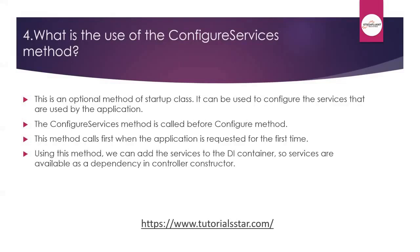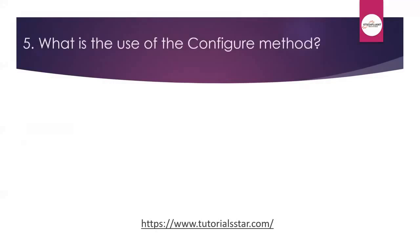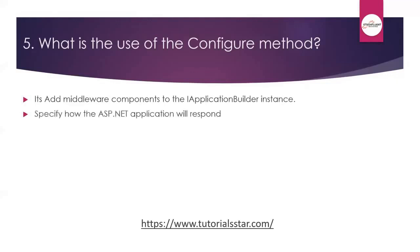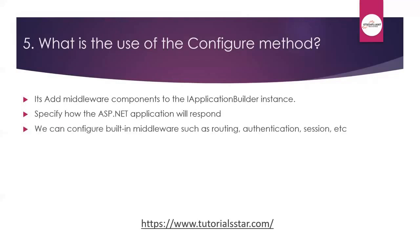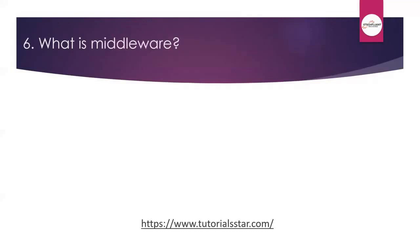The next question is: what is the Configure method? This method is used to add middleware components to the IApplicationBuilder instance available inside it. It specifies how the application will respond to individual HTTP requests. It accepts IApplicationBuilder as a parameter plus two optional parameters: IHostingEnvironment and ILoggerFactory. Using this method, you can configure built-in middleware such as routing, authentication, session, and exception handling, depending on how you want to build your request pipeline.